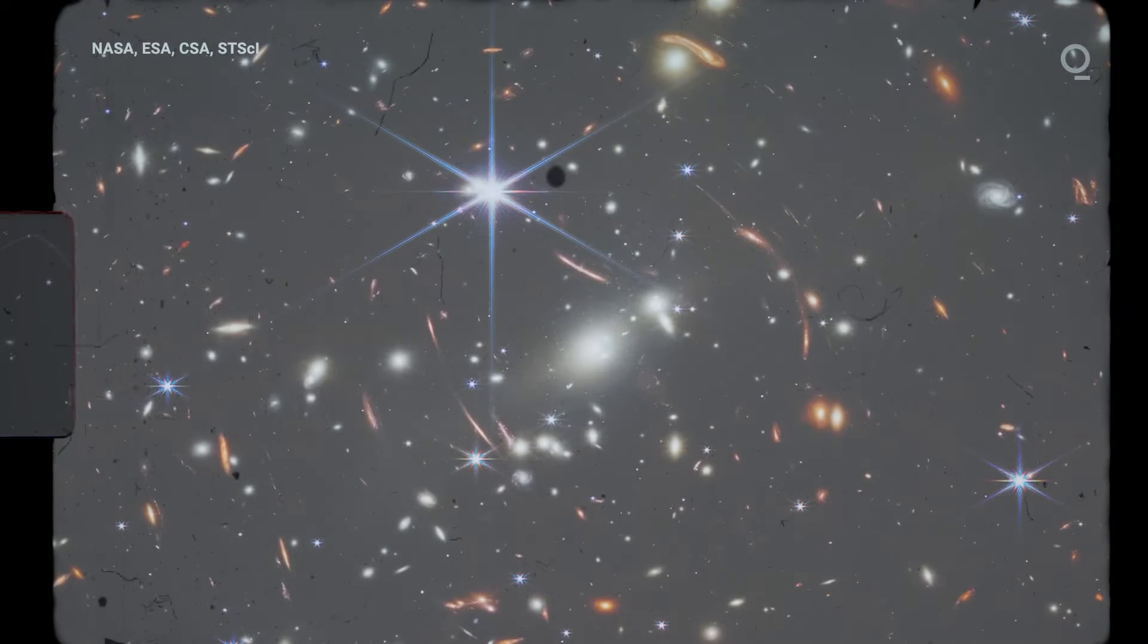But the universe has been expanding, and so the light has been stretching. And so for the most distant galaxies, we're looking back in time almost to the Big Bang. The Hubble was not sensitive to that light, so the Webb can see the formation of the first galaxies.